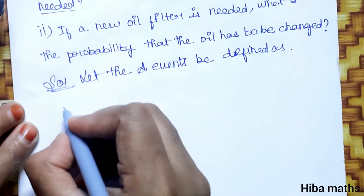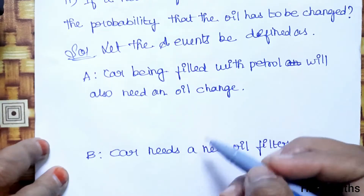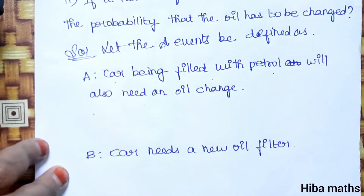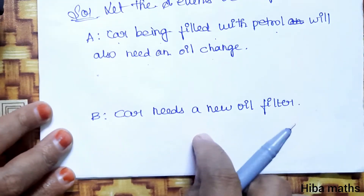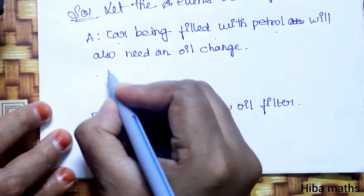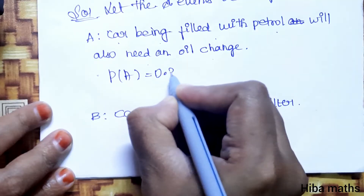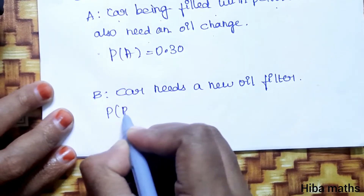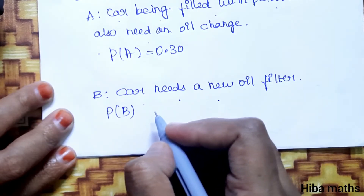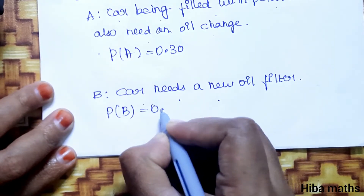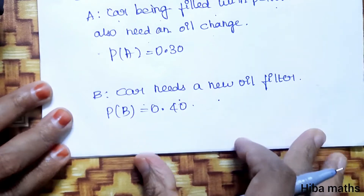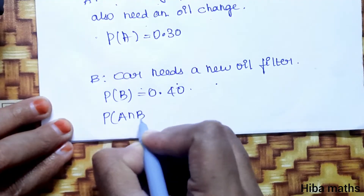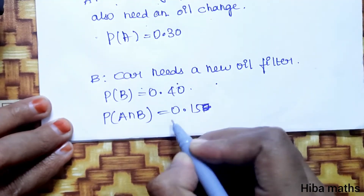Let event A be defined as: first car being filled with petrol will also need an oil change. P of A equals 0.30. Let event B be defined as: car needs a new oil filter. P of B equals 0.40. Probability of A intersection B equals 0.15.